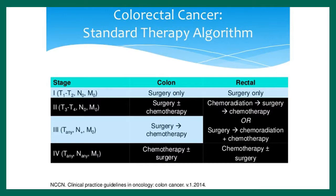For rectal cancer, the rectum is in a very tight space, making it easier for tumors to spread outside, so it's somewhat more difficult to treat with less favorable prognosis. For early rectal cancer, surgery is sufficient. For stage two or three rectal cancer, treatment involves combined chemo-radiation followed by surgery then more chemotherapy — or surgery first, then chemo-radiation, then more chemotherapy — depending on the center. Stage four rectal cancer is treated with chemotherapy, rarely surgery.